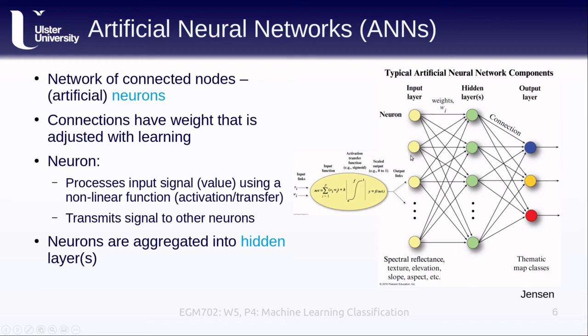Each of these neurons are aggregated into different layers, which are sometimes also called hidden layers, and we can have any number of different layers that work into our network.